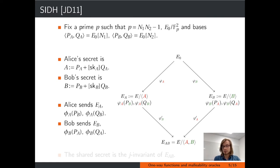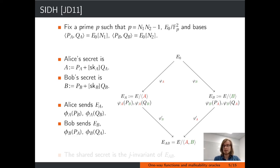Using this torsion point information, both Alice and Bob can translate their secret isogeny onto the curve EB and EA respectively, which after one more isogeny computation allows them both to compute the curve EAB up to isomorphism. This works because we're quotienting out two subgroups that only trivially intersect, so the order does not matter. Since both Alice and Bob arrive at an isomorphic curve, the J-invariant is used as a shared secret.